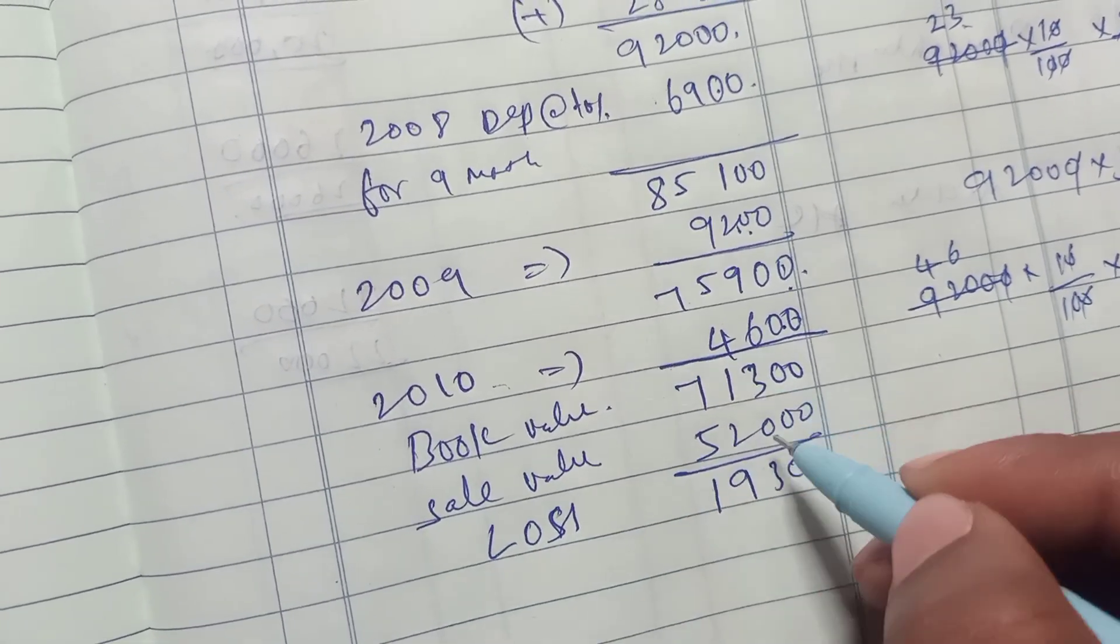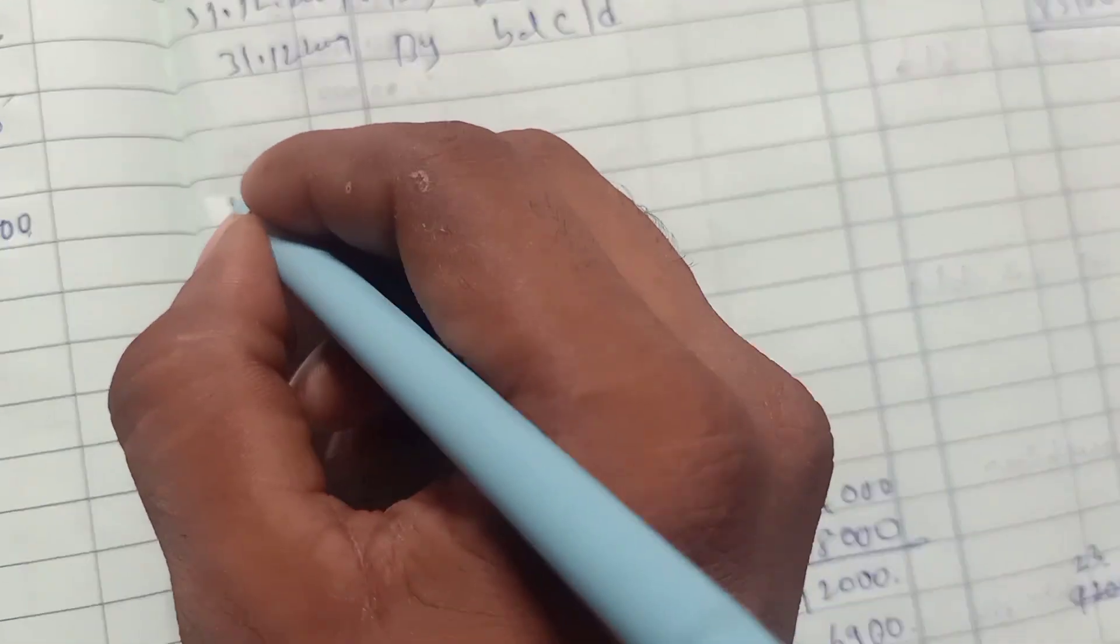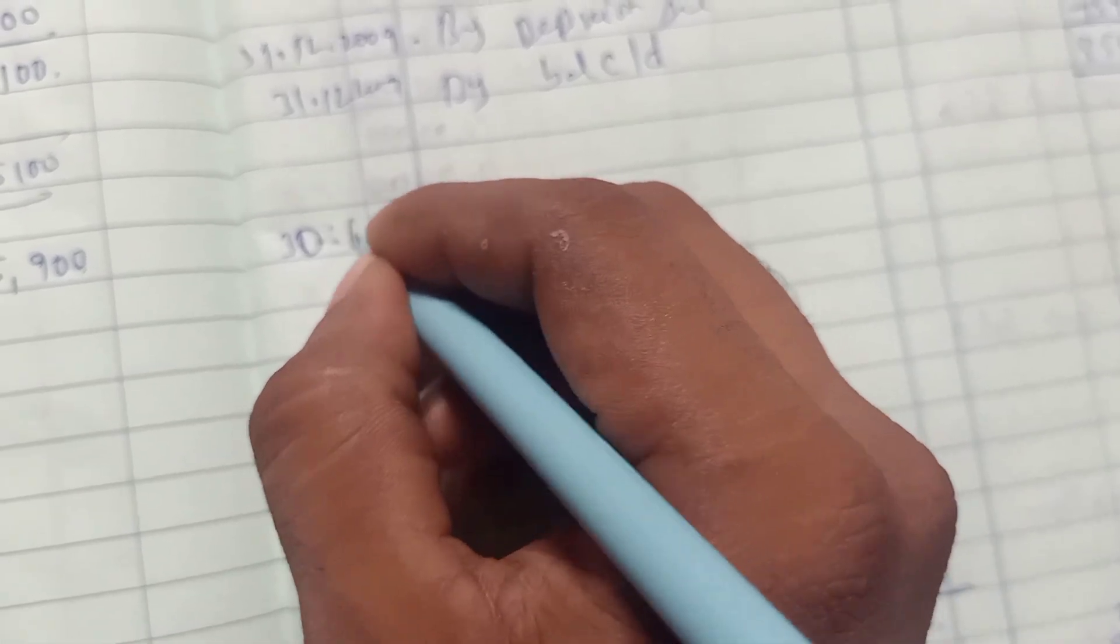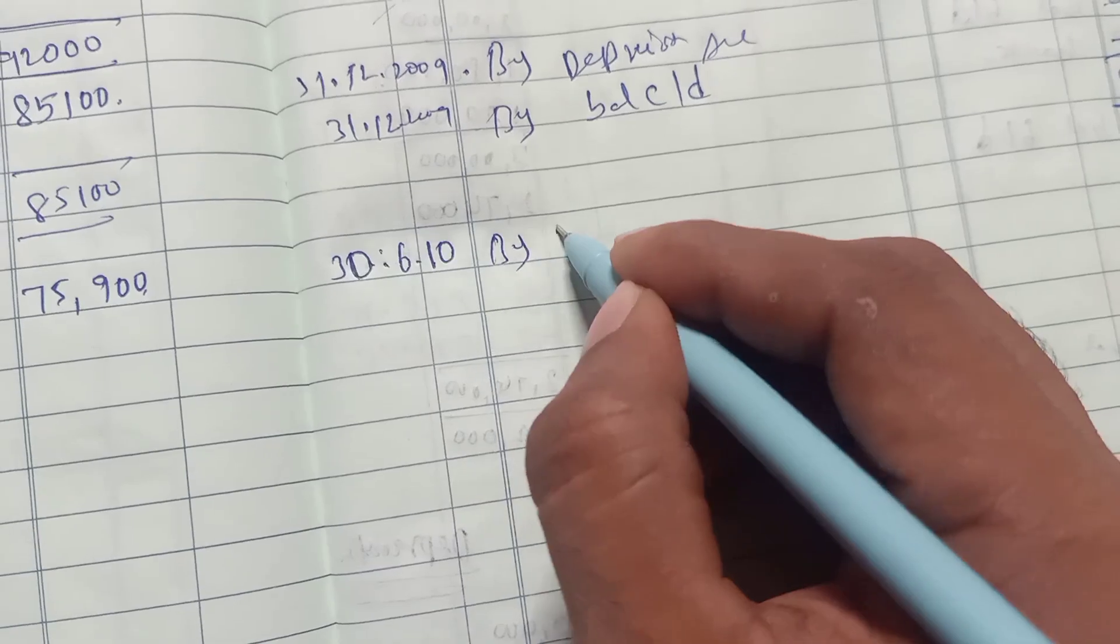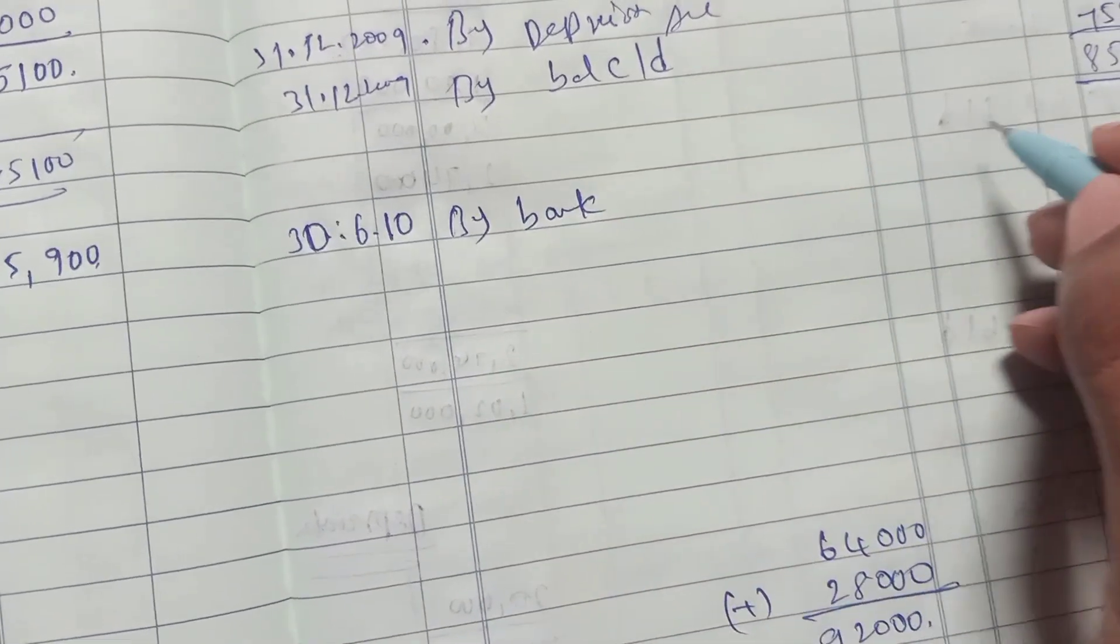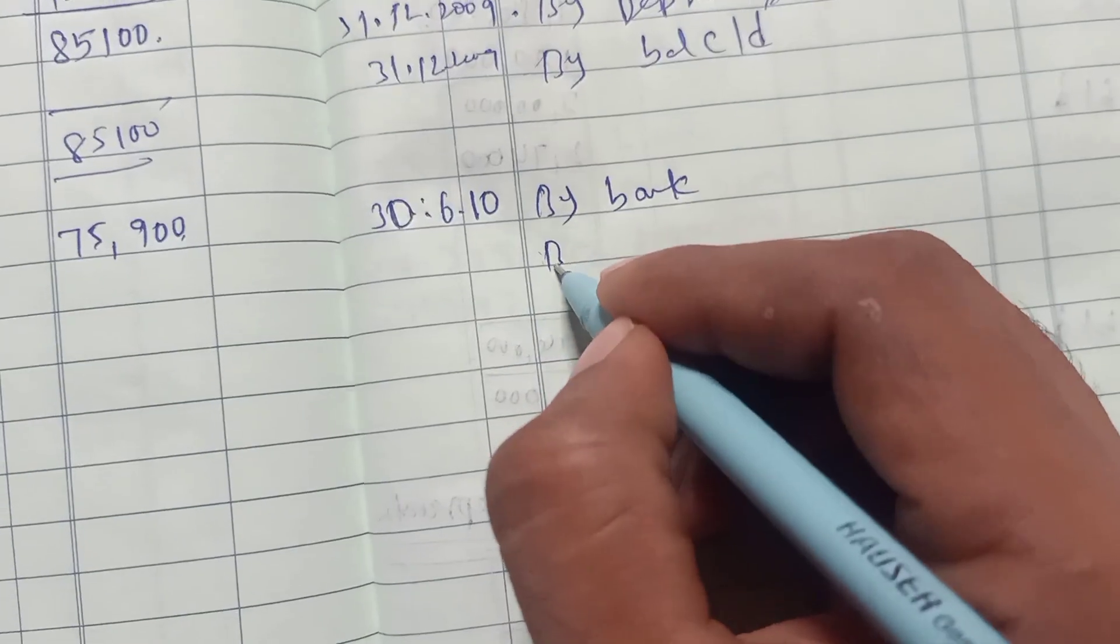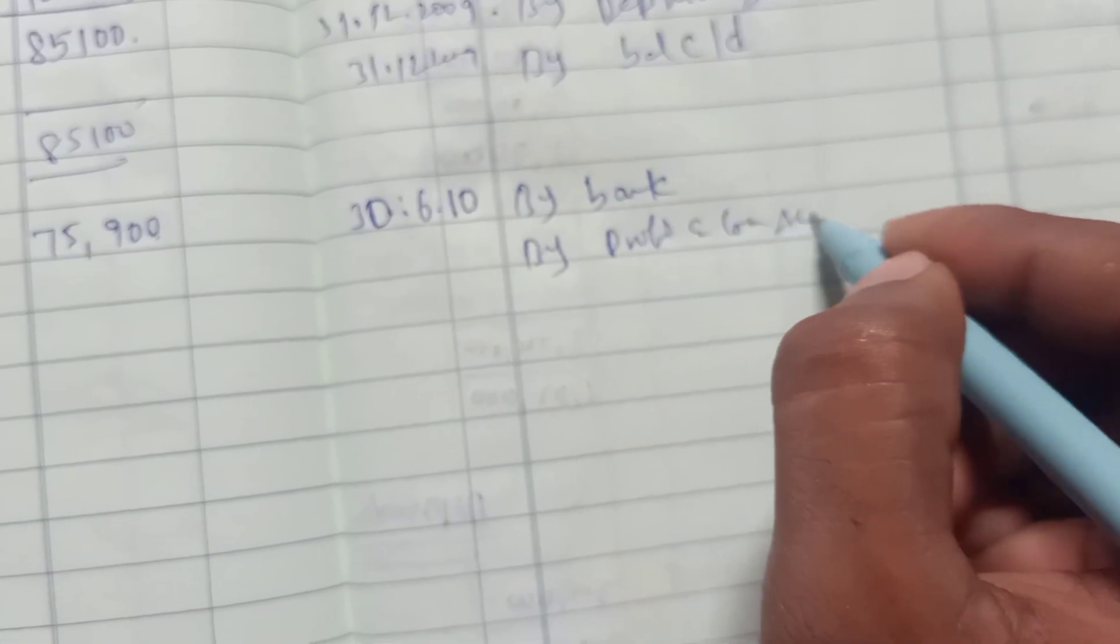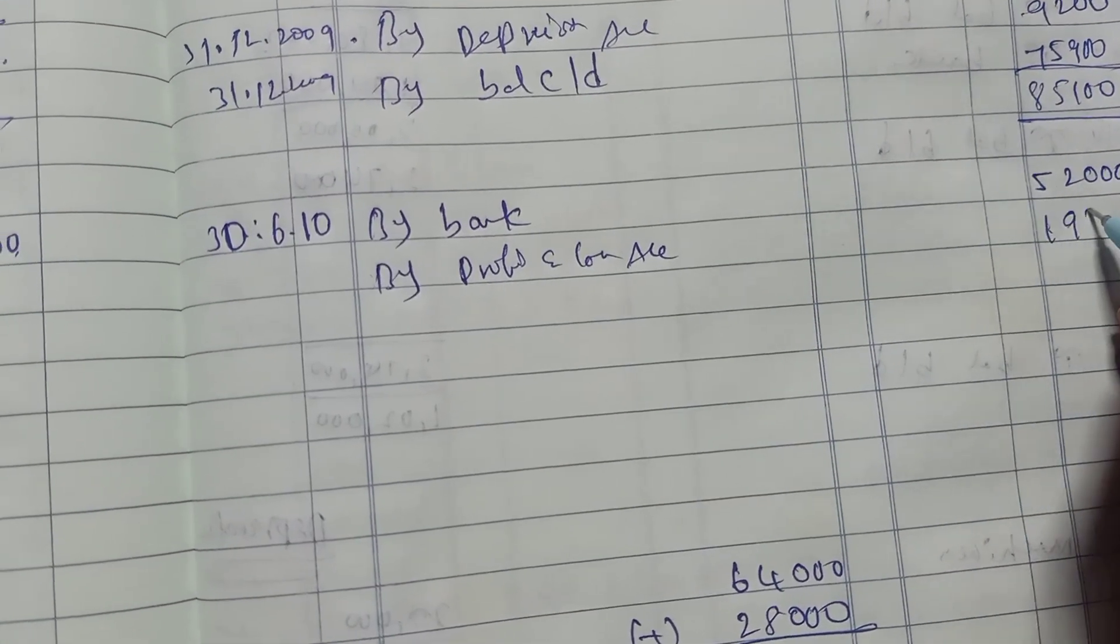That means the loss is $19,300. Book value $71,300 but sale is $52,000, so loss is $19,300. First, by Bank, sale value is $52,000. By profit and loss account, the loss $19,300.